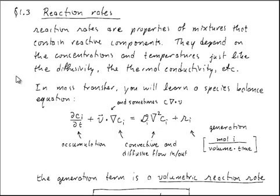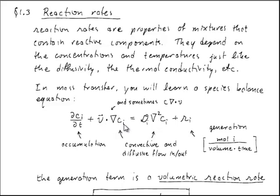In mass transfer, you will learn something called a species balance equation, where we write down that the rate of accumulation of species i is a derivative of the concentration of that species with respect to time. Added to the material derivative — the velocity dotted into the gradient of the concentration with respect to spatial position — that equals the diffusion terms: the diffusivity times the Laplacian of the concentration, plus the rate at which species i is being generated per unit volume in the bulk.